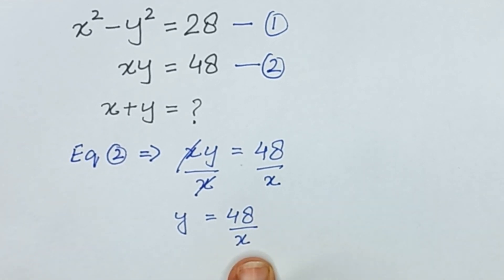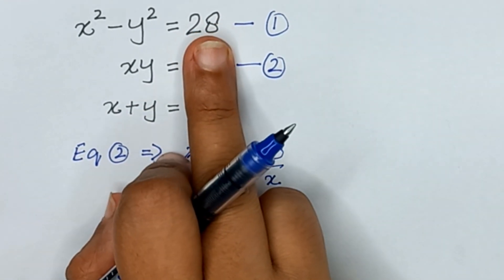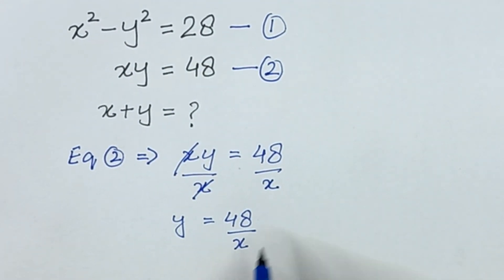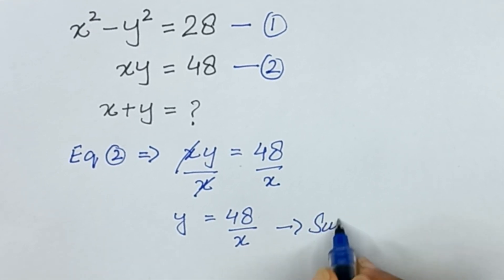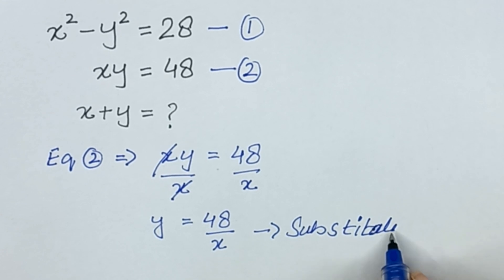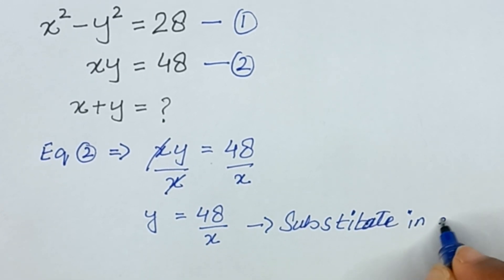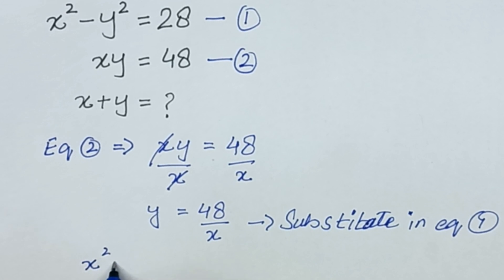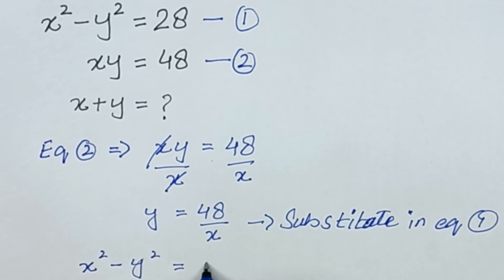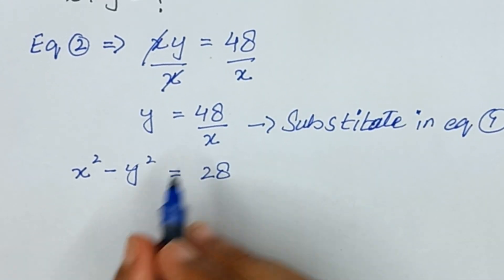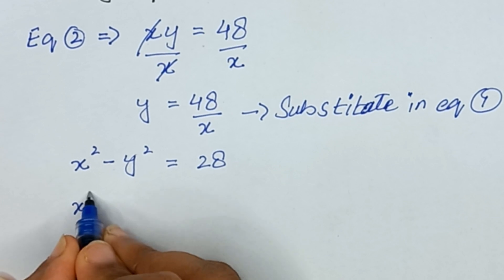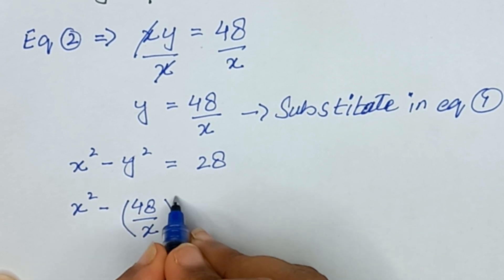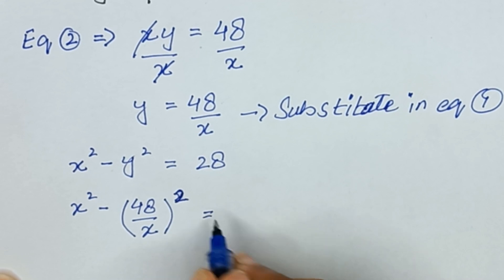Now we will substitute this value of y into equation number one so that the equation is entirely in terms of x. Substituting into equation number one, x squared minus y squared equals 28 becomes x squared minus (48 divided by x) squared equals 28.